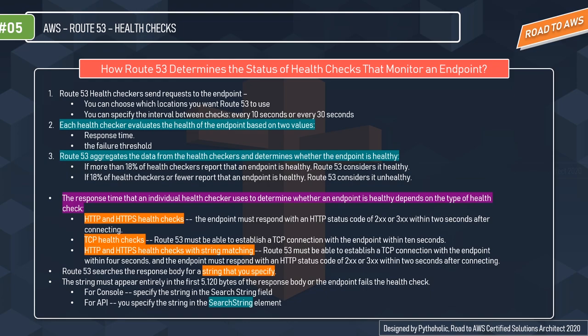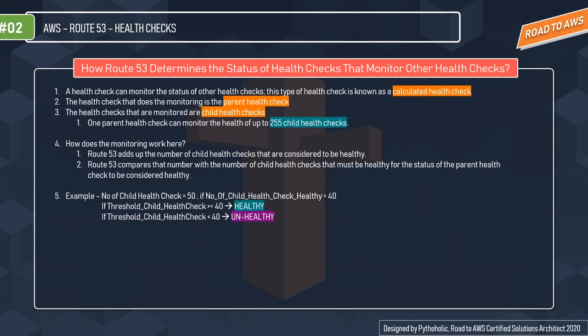Next: how does Route 53 determine the status of health checks that monitor other health checks? You can actually monitor other health checks with Route 53 health checks. This type is known as a calculated health check. The health check doing the monitoring is the parent health check, and the health checks being monitored are the child health checks. One parent health check can monitor the health of up to 255 child health checks.